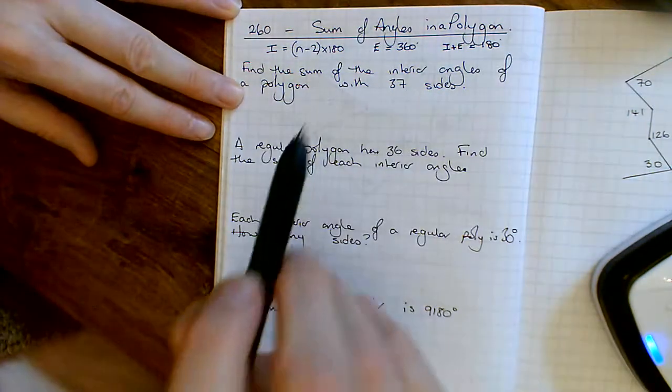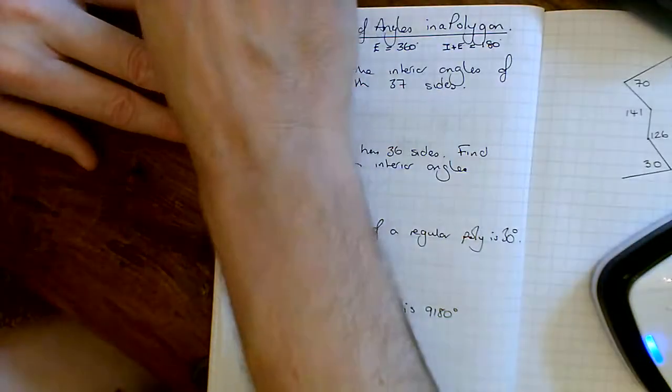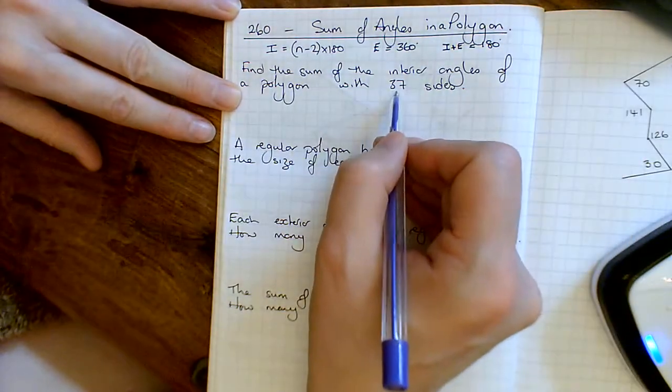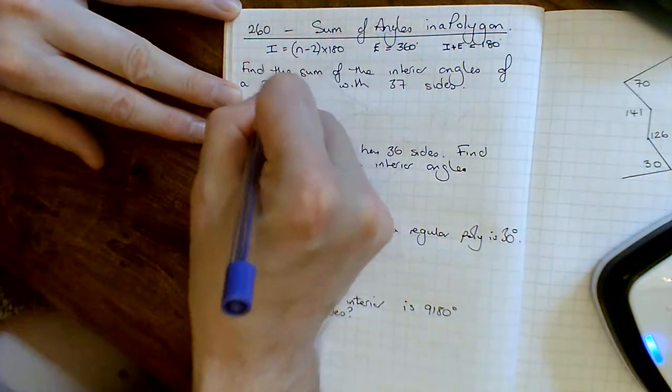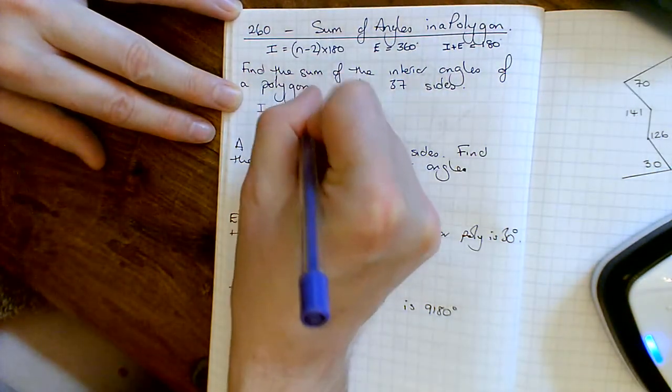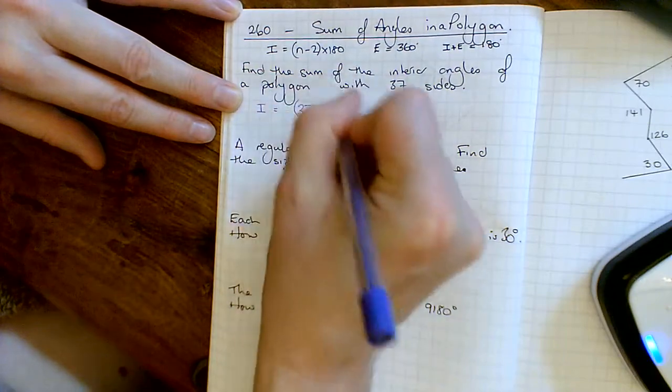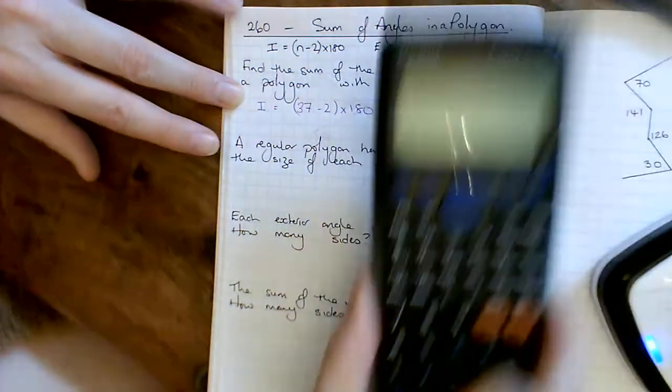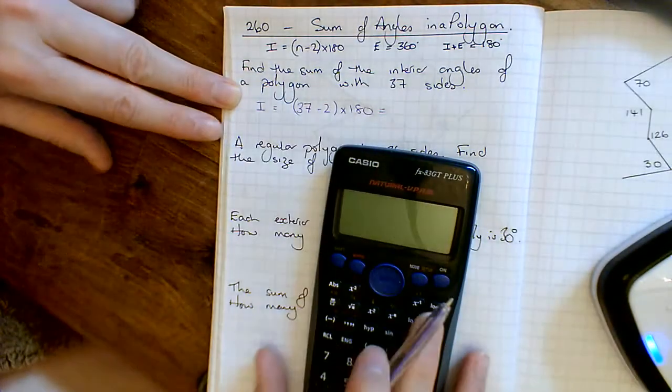Okay, so there are the results I'm going to use. Here we go. Find the sum of the interior angles of a polygon with 37 sides. So the inside angles, all we do is the number of sides take away 2 and we times that by 180, and then you get your answer for the inside angles, what they'll all add up to. Sum means what do they all add up to.